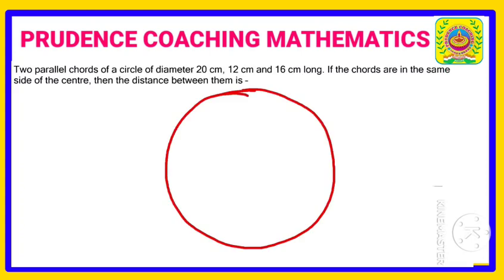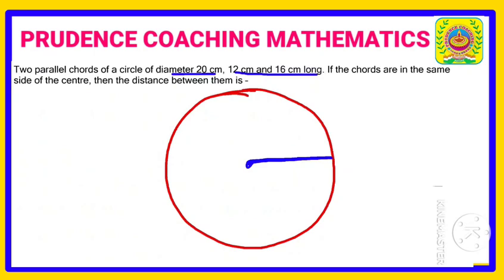Two parallel chords of a circle have a diameter of 20 centimeters. Let us draw a circle whose radius will be 20 divided by 2, because diameter is double the radius, so the radius will be 10 centimeters. Two chords of the circle are given to be 12 centimeters and 16 centimeters long.